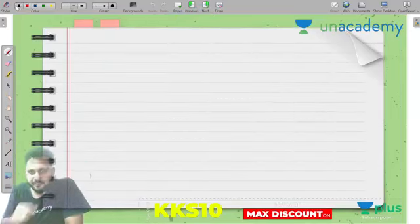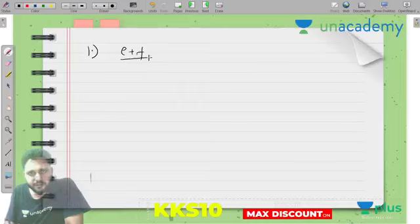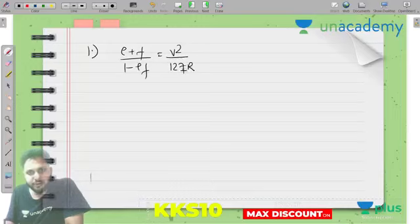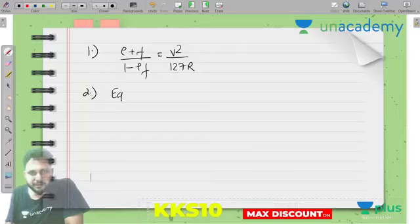In exams, formulas are often asked. Generally, we talk about three formulas. One is (E + F) / (1 - EF) = v squared / 127R, where E is super elevation, F is lateral friction coefficient, v is speed in kmph, R is radius in meters.